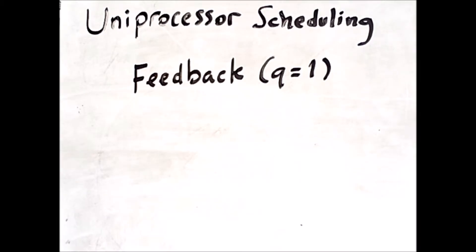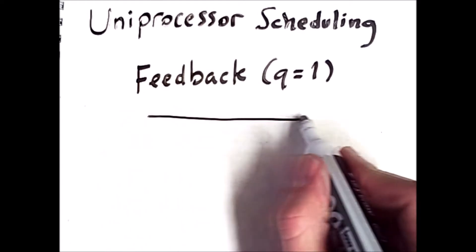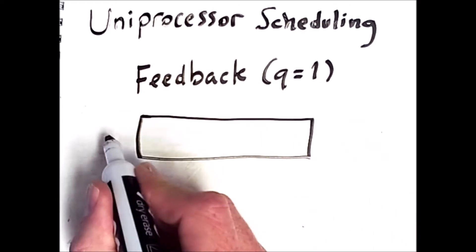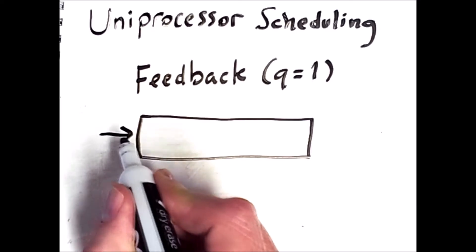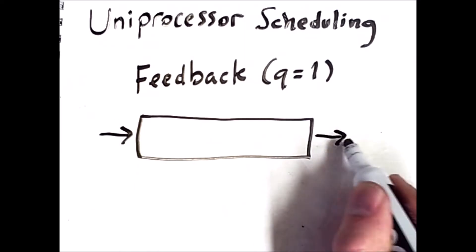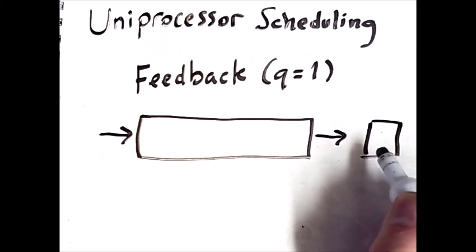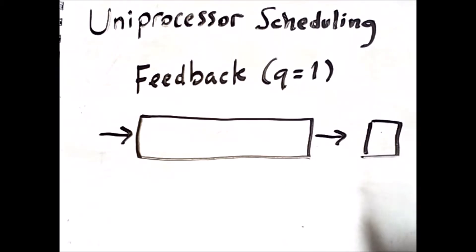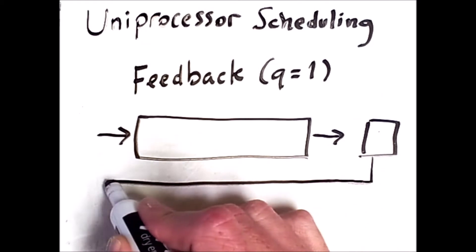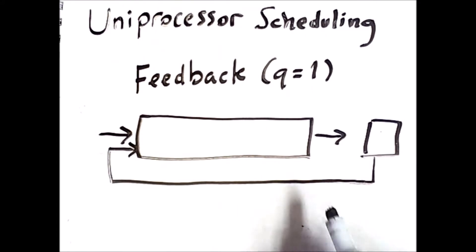Now where feedback differs from round robin is that instead of maintaining a single queue, we maintain multiple queues. So here is a ready queue, and new processes enter at the back and come off of the front, and they get on the processor. In round robin, things run on the processor for a while, and then they get off, and they go back to the end of the line of this one queue. That is how round robin works, but feedback has multiple wait queues.